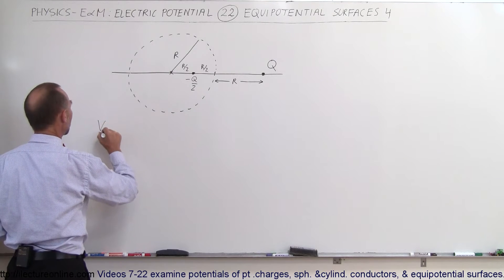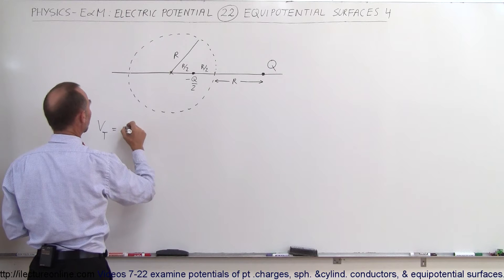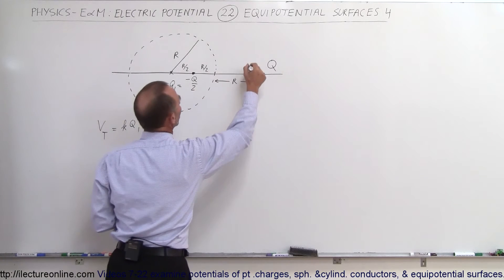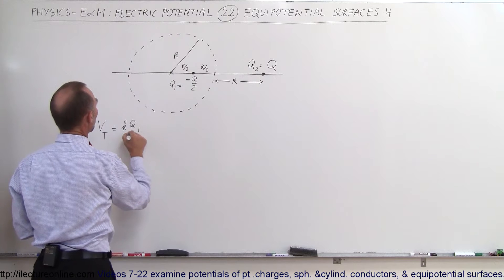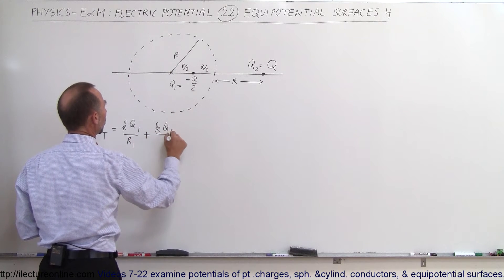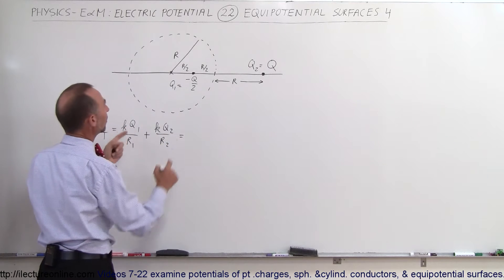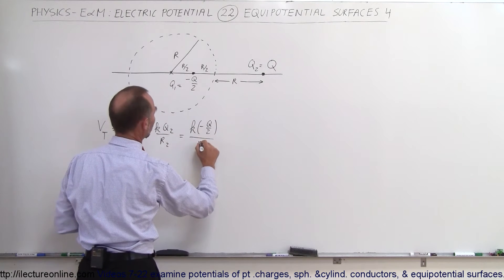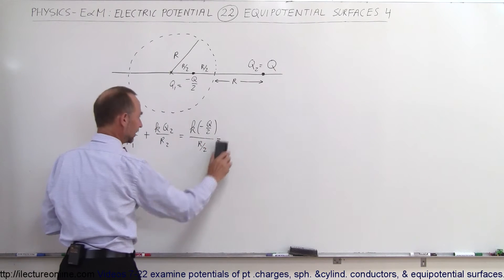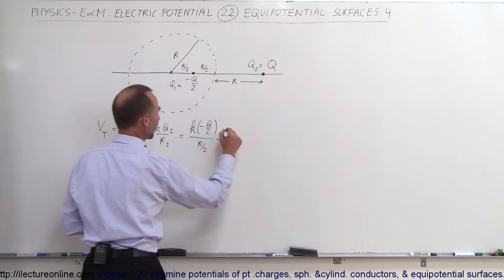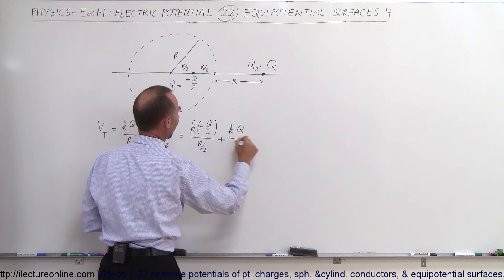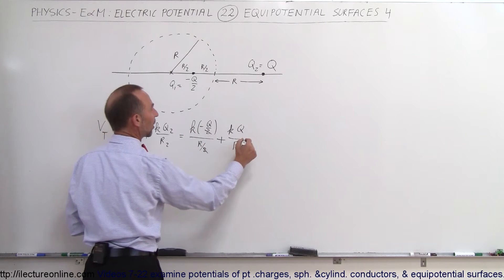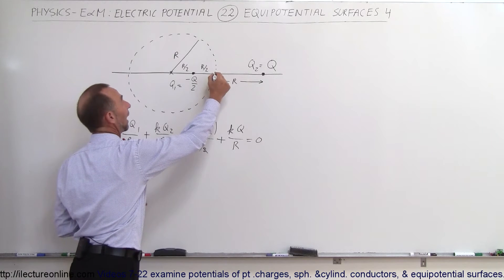The total potential at that location equals K·Q1/R1 + K·Q2/R2. Here Q1 is -Q/2 and R1 is R/2, while Q2 is Q and R2 is R. So we get K·(-Q/2)/(R/2) plus K·Q/R. The factor of 2 in the denominator cancels with the 2 in the distance, giving -KQ/R + KQ/R, which equals zero — confirming that location has zero potential.